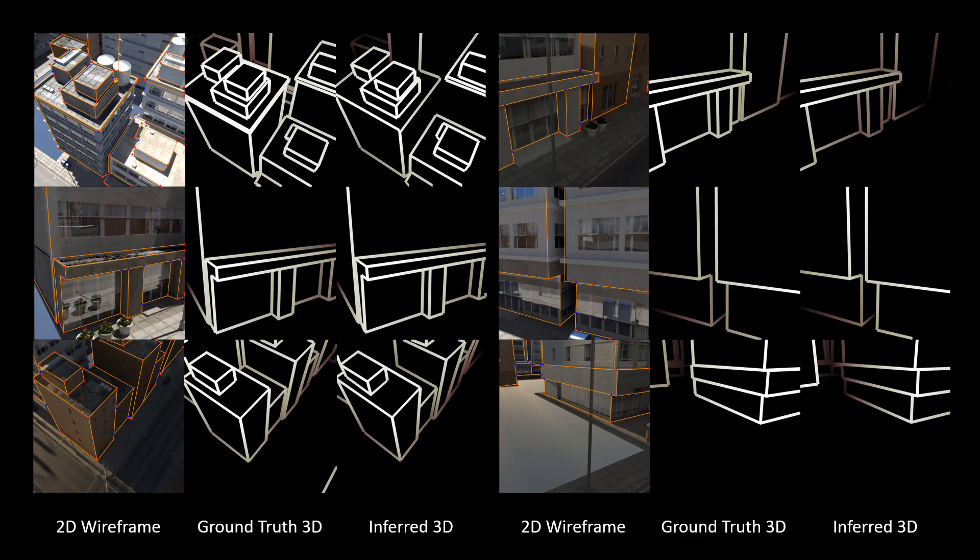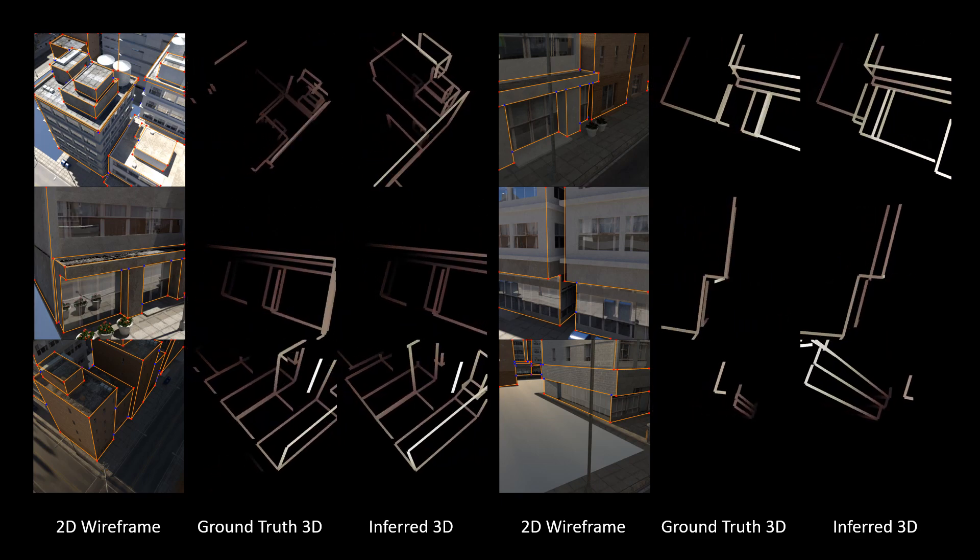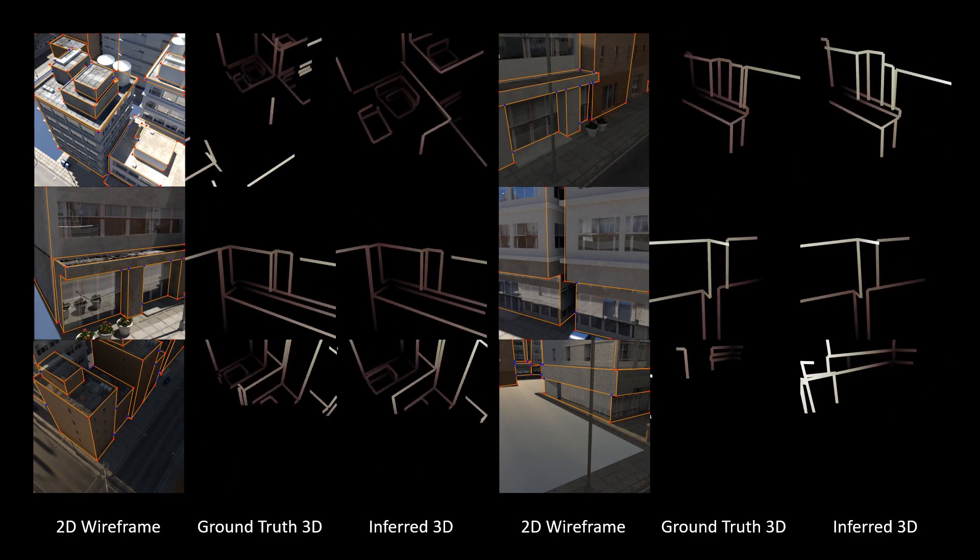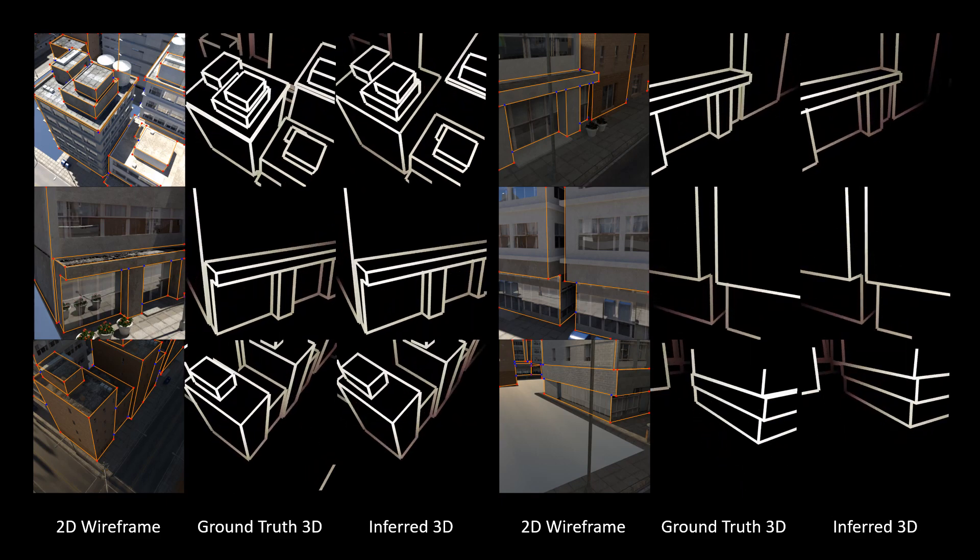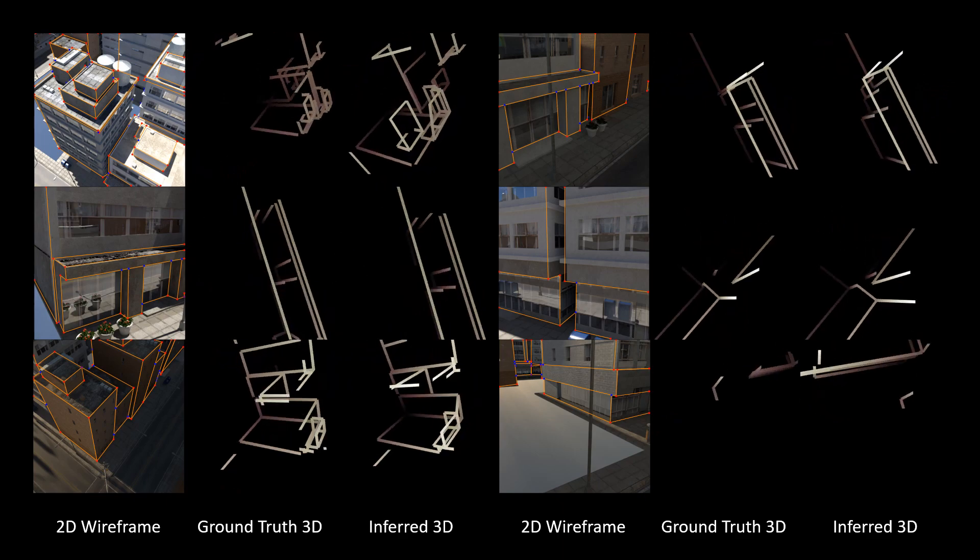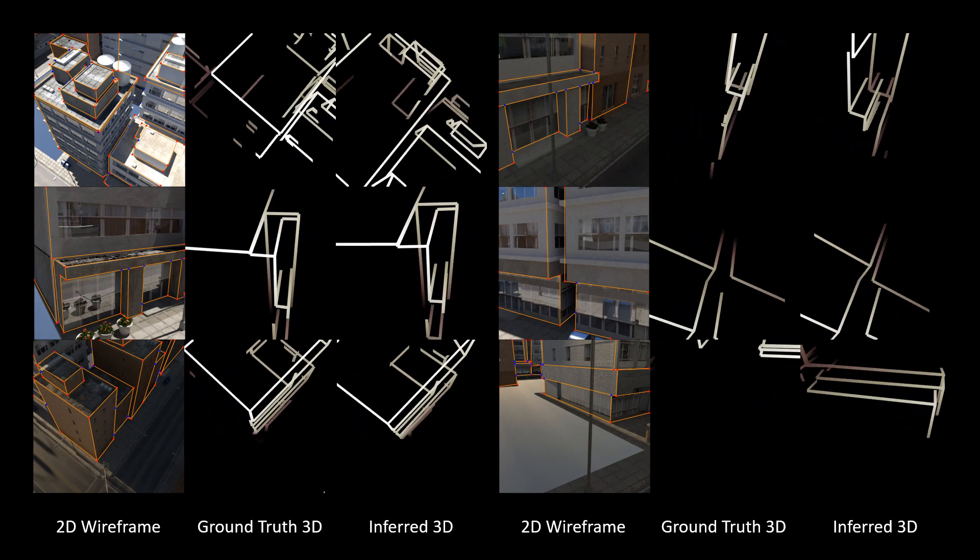We also compare our 3D reconstructed results with their ground truth wireframes in the following six synthetic scenes. The images in the first column show our reconstructed 2D wireframes overlaid on the input rendered images, while the videos in the second and third columns visualize the ground truth and the reconstructed 3D wireframes, respectively.